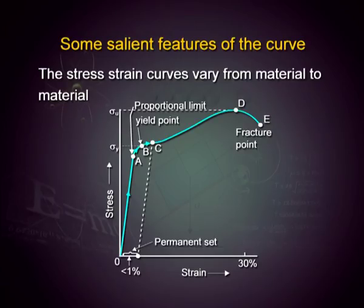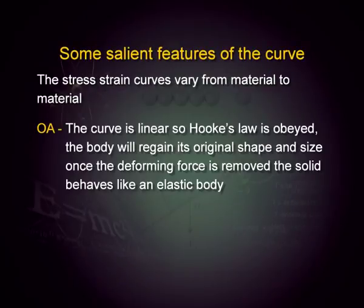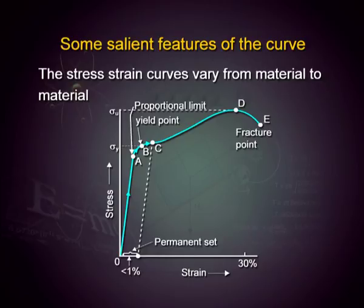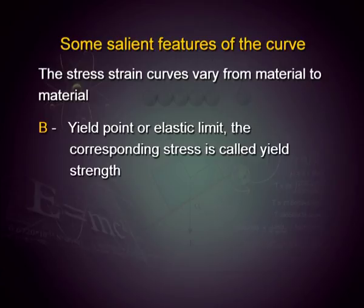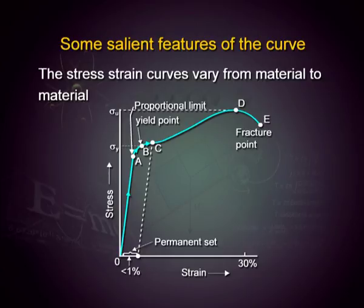Some of the salient features of the graph are: if you look carefully, there is a region OA where the curve is linear, so Hooke's law is obeyed — stress is directly proportional to strain, the body will regain its original shape and size once the deforming force is removed, and the solid behaves like an elastic body. In the AB section of the graph, stress is not proportional to strain, but the body still returns to its original shape once the deforming force is removed because you have not yet deformed it completely. Point B is the yield point or elastic limit, the corresponding stress is called yield strength, and this is the optimum deformation the system can withstand.